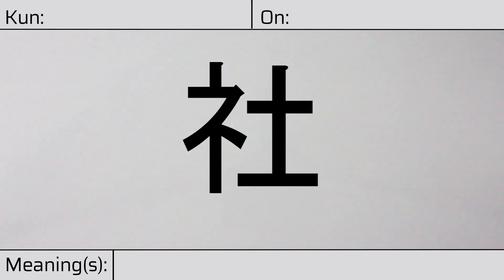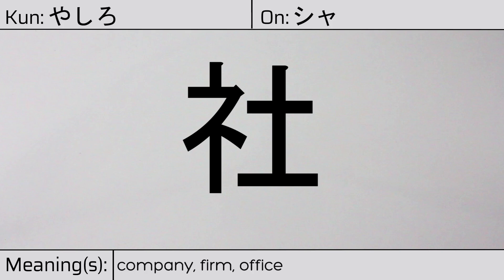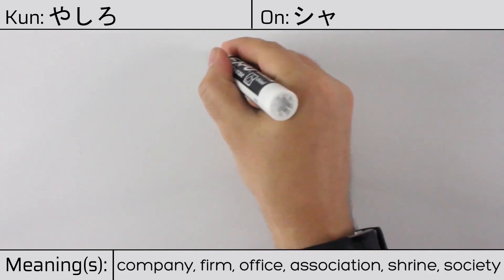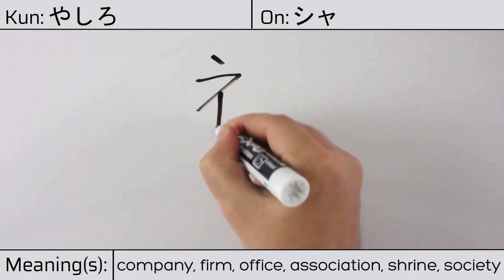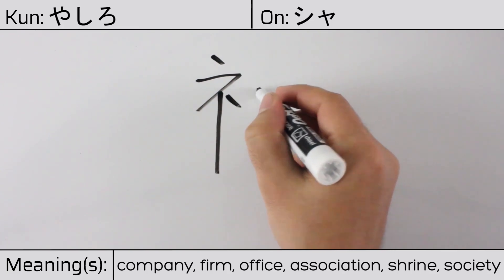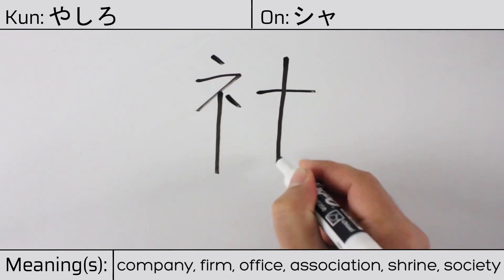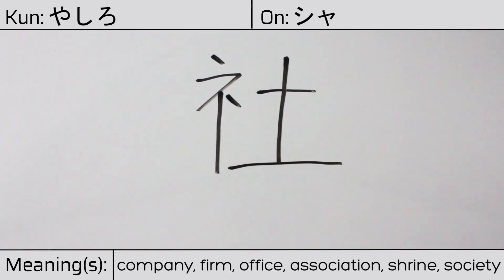Welcome to this lesson on Japanese kanji. Today, we'll be discussing this character. This kanji has a kunyomi or Japanese reading of yashiro, and it has an onyomi or Chinese reading of xia. This character has the meanings company, firm, office, association, shrine, or society. Here is the stroke order.